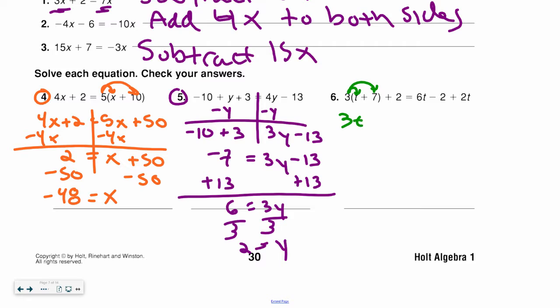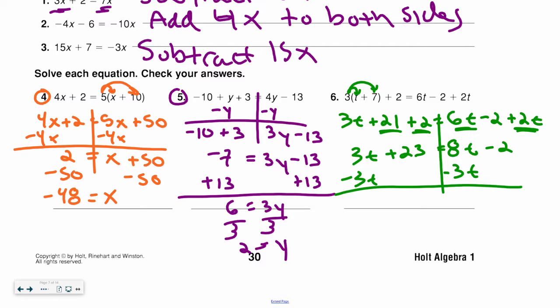Again, distributive property is multiplication. This one has multiple steps. So I have multiple t's. So what I do is, I can actually combine the 6t and the 2t on that one side, because they're on the same side. And I can combine the 21 and the 2, because they are like terms. Now I move that 3t over. Remember, I'm left with 23 equals 5t minus 2, add the 2, divide by 5, and I can get the answer, which is t equals 5.